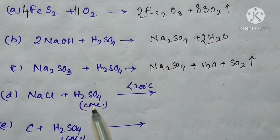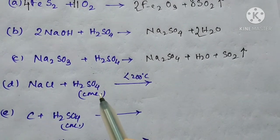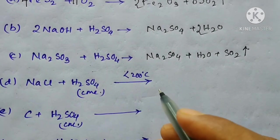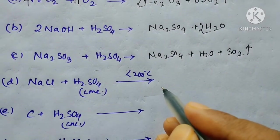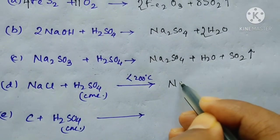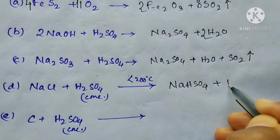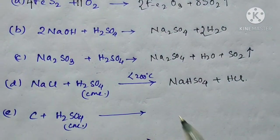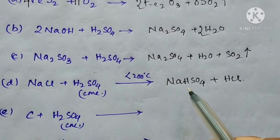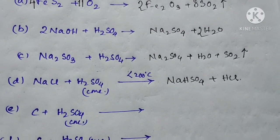The next reaction is sodium chloride reacting with sulfuric acid — concentrated sulfuric acid at less than 200 degrees centigrade. This is actually a HCl preparation. It will form sodium hydrogen sulfate (NaHSO₄) and HCl. If it was more than 200 degrees centigrade, it would form sodium sulfate instead.